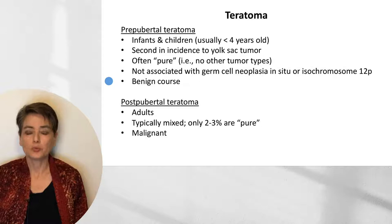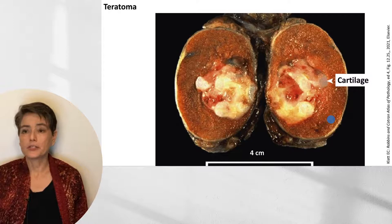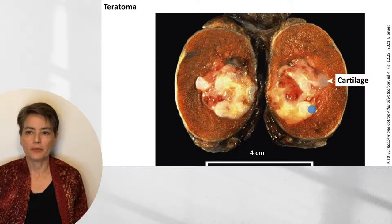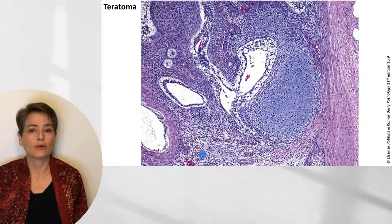Here you can see a testicular teratoma with healthy testis surrounding it, immediately appreciating the variegated appearance. You can see a focus of cartilage. In ovarian teratomas, which are most commonly mature, we would see not only cartilage but also hair and sebaceous and squamous detritus — we do not typically see that in testicular teratomas even with mature differentiation. On histology, we can see immature cartilage, some epithelium, and stromal cells. In an ovarian teratoma we would be looking for neuroepithelium to determine malignant risk, but that is not important in testicular teratomas.